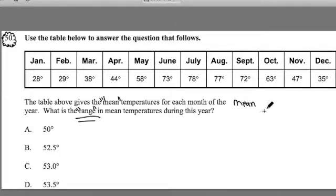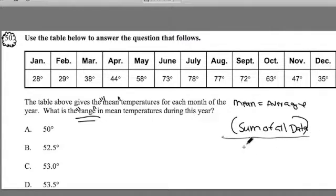When we're trying to find the mean in a set of numbers, think of mean as being equal to the average. So mean is equal to average. And when you're trying to find the average, you add up, you find the sum of all your data points. Sum of all the data. And then you divide it by the number of data points you have.